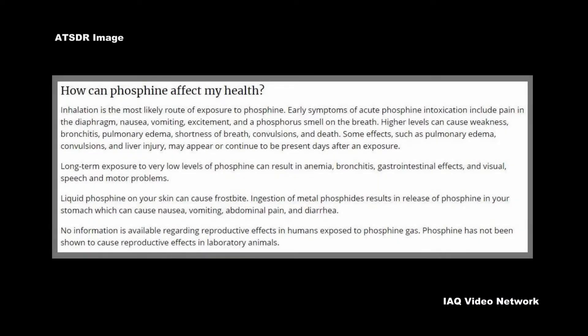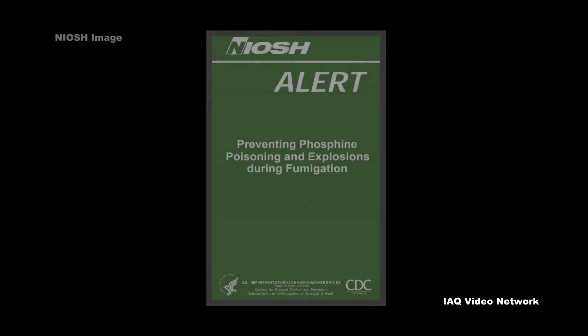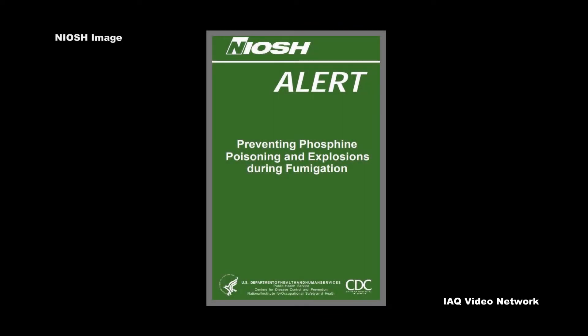Early symptoms of acute phosphine intoxication include pain in the diaphragm, nausea, vomiting, excitement, and the phosphorus smell on the breath. Higher levels can cause weakness, bronchitis, pulmonary edema, shortness of breath, convulsions, and death.